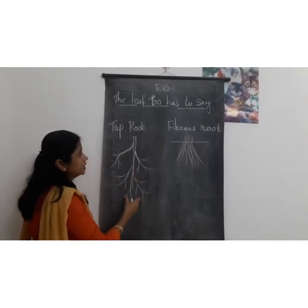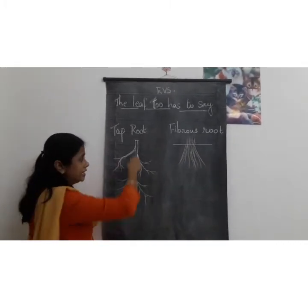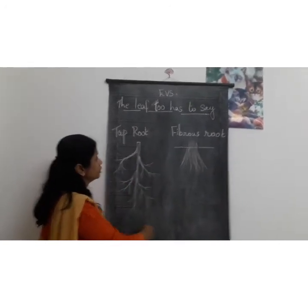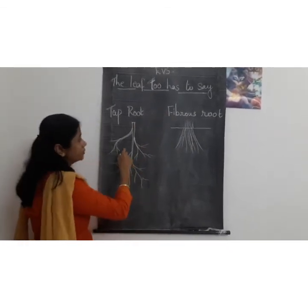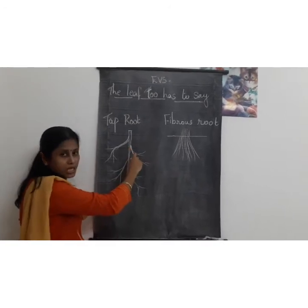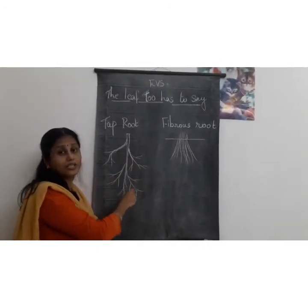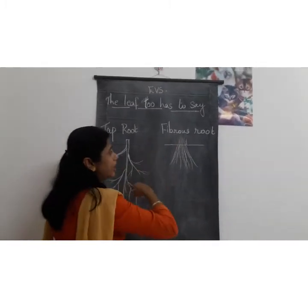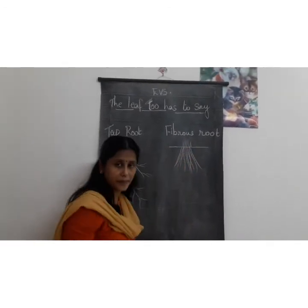Whereas in the tap root it is thick and it goes deep into the soil. So what is the difference between a tap root and a fibrous root? Tap root means one main root with smaller roots growing from the main root, and this main root is thick and goes deep into the soil. Whereas in fibrous root, it is a cluster of roots growing from the base of the stem.